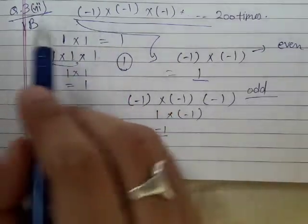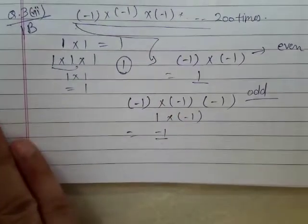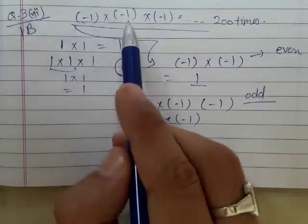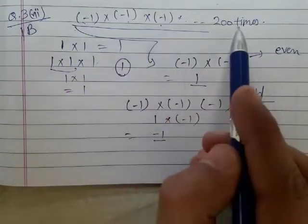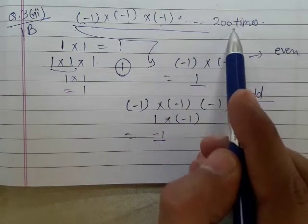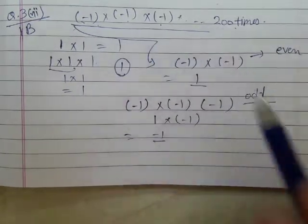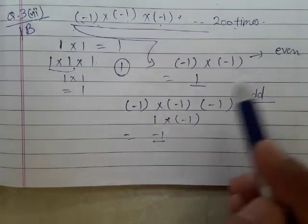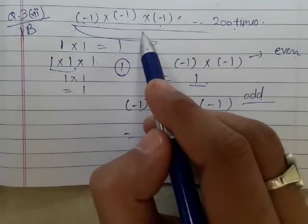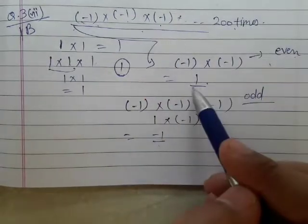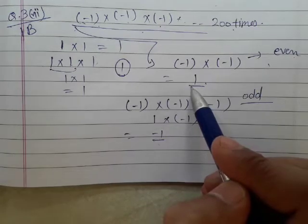So now, in this question, we have to multiply minus 1 200 times. That means I have to multiply minus 1 for even times. And if I multiply minus 1 for even times, I will get plus 1.